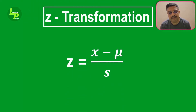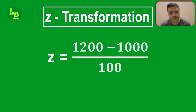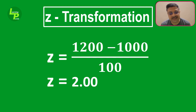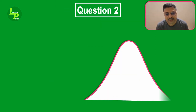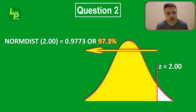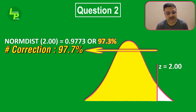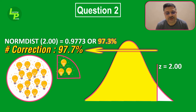In our next problem statement, we need to find the percentage of bulbs that will fuse before 1200 hours of service. We will follow the same procedure, but now use 1200 as the X value instead of 1100 for calculating the Z value. Using 1200 as the X value, we get the Z value equal to 2.00. Using NORM.S.DIST on this value, we get the integral under the curve as 0.9773 or 97.73%. These are the percentage of bulbs that are expected to fuse before completing 1200 hours of service.